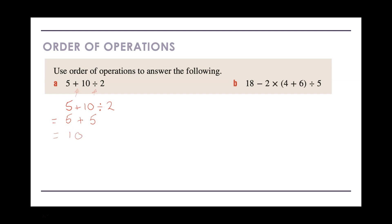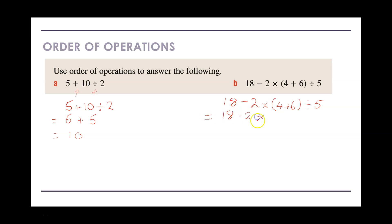Let's look at the next one, which is more complex: 18 minus 2 times bracket 4 plus 6 bracket divided by 5. The very first thing I need to do is evaluate any brackets. I can see one set of brackets, so my next line is going to be 18 still minus 2 times — and now I'll do 4 plus 6, which is 10 — and then I've still got the divide by 5 afterwards.